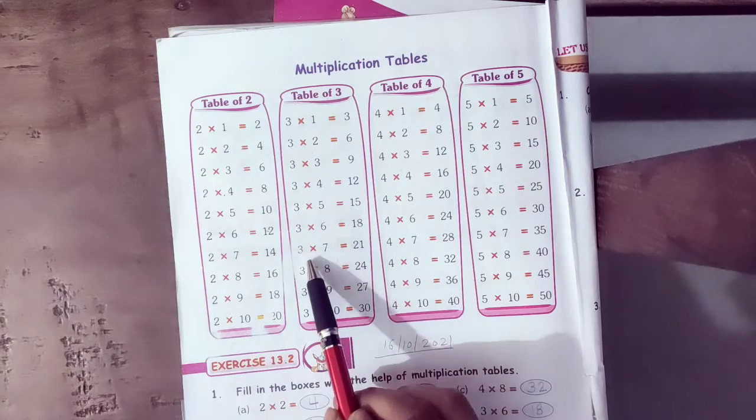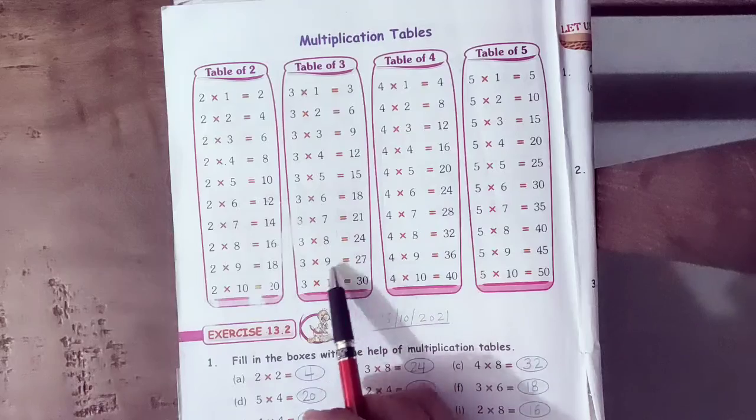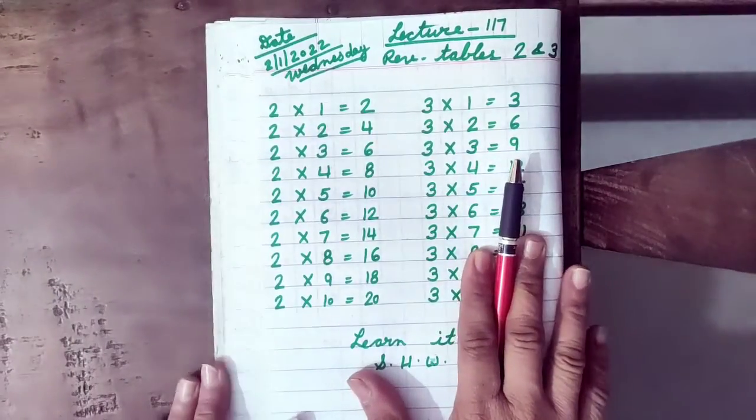3 sixes are 18, 3 sevens are 21, 3 eights are 24, 3 nines are 27, 3 tens are 30. So my dear students let's open your Maths notebook.